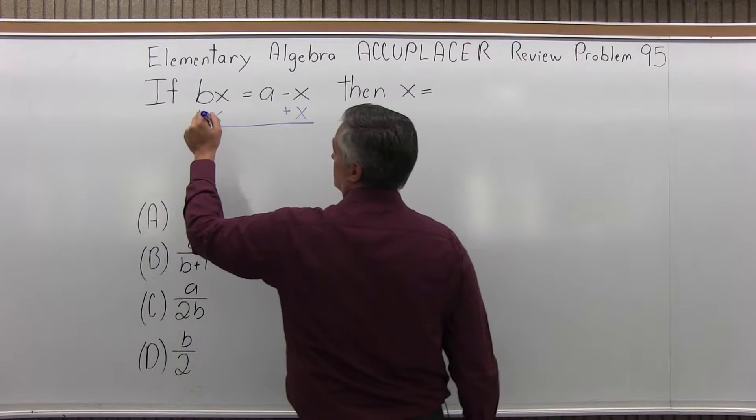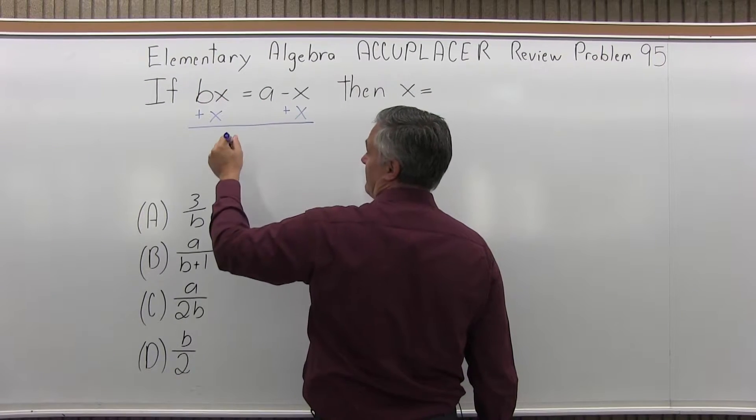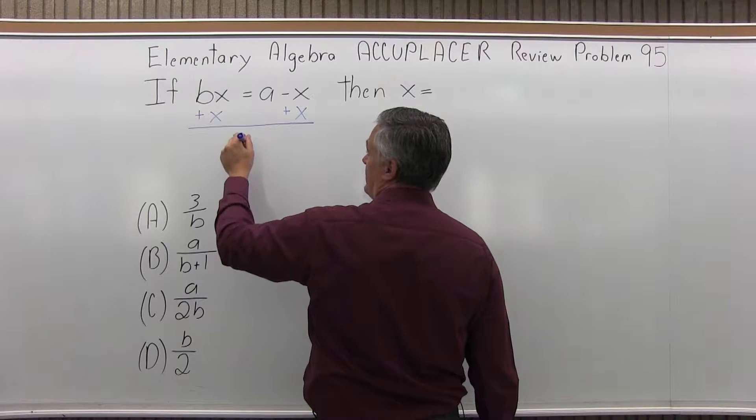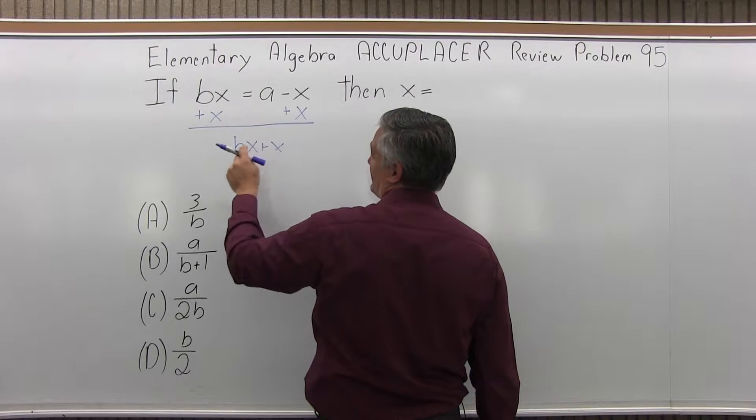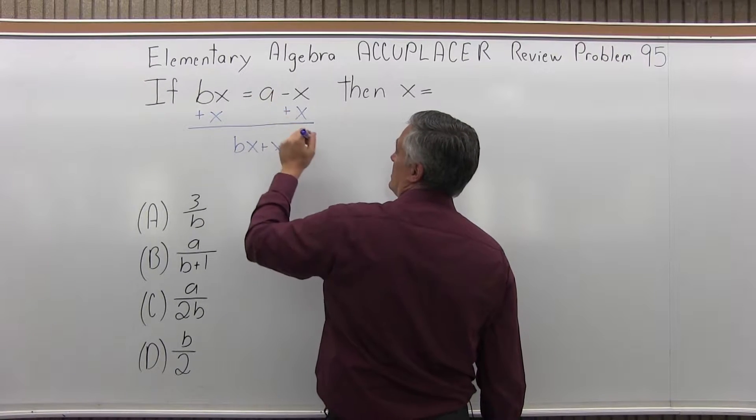So now when I combine those, I'm going to have Bx plus x. They don't really go together because one has a B and the other doesn't. And it equals a.